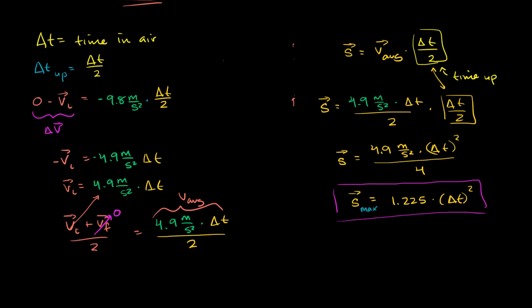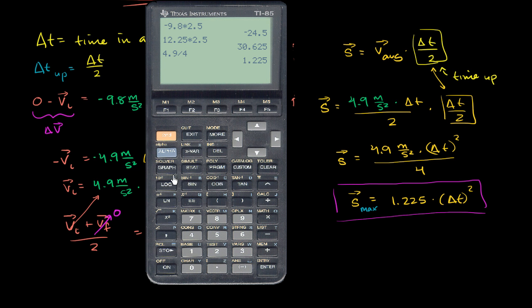So we can use that if a ball is in the air for 5 seconds. We can verify our computation from the last video. Our maximum displacement, 1.225 times 5 squared, which is 25, will give us 30.625. That's what we got in the last video.